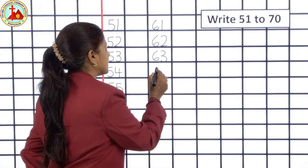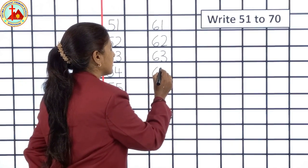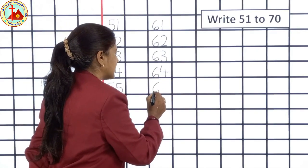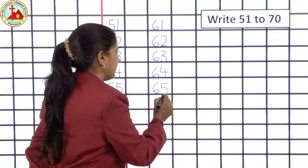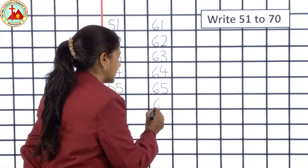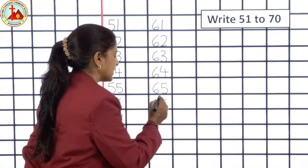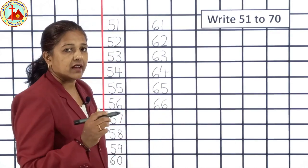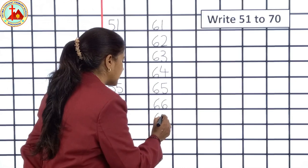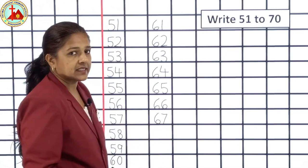After 63, 6, 4, 64. Then, 6, 5, 65. 6, 6, 66. After 66, 6, 7, 67.